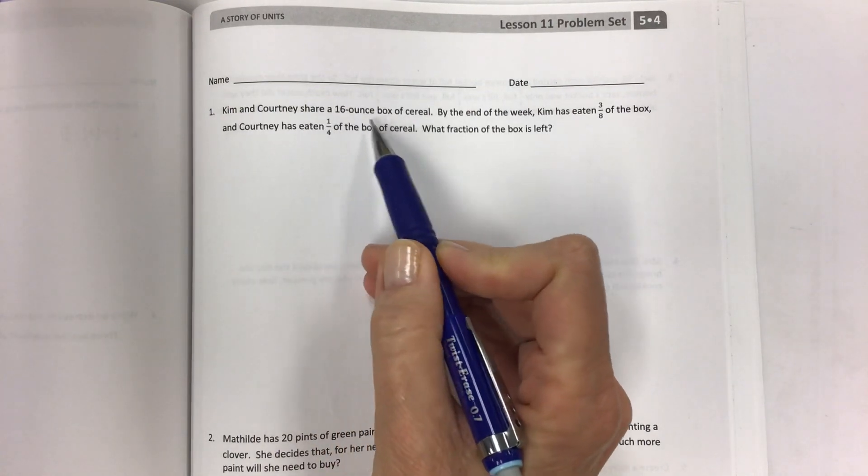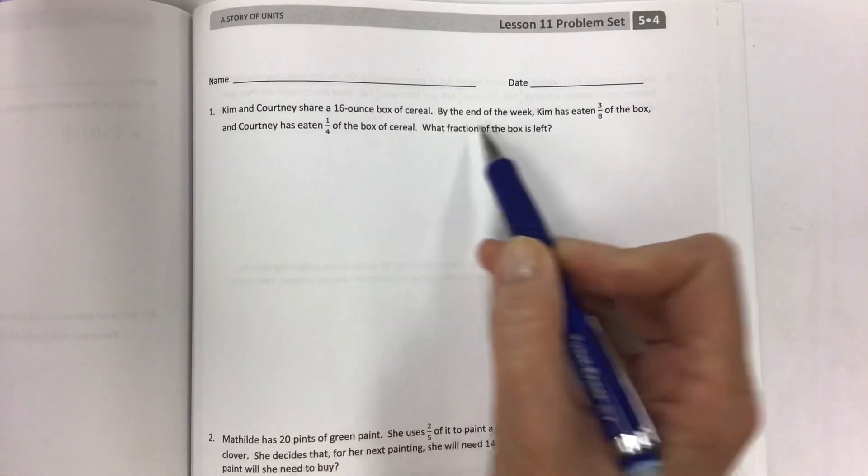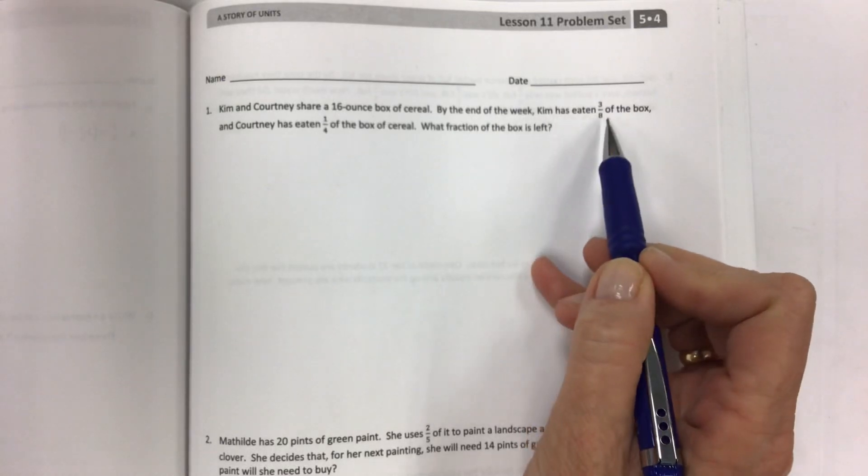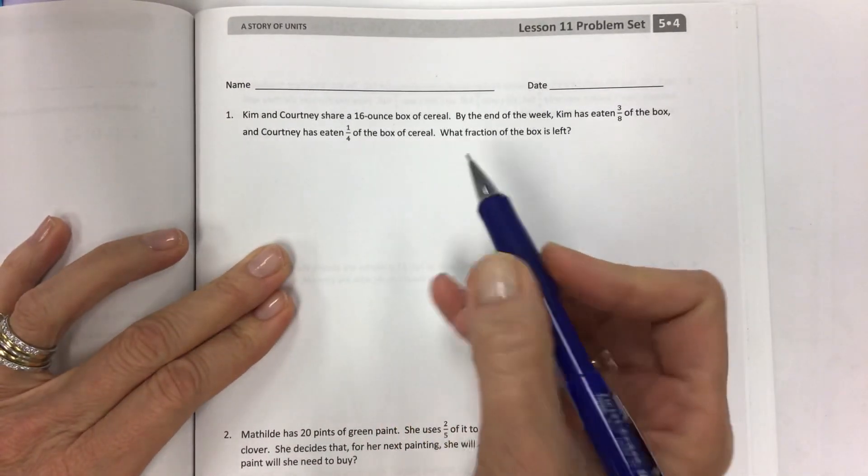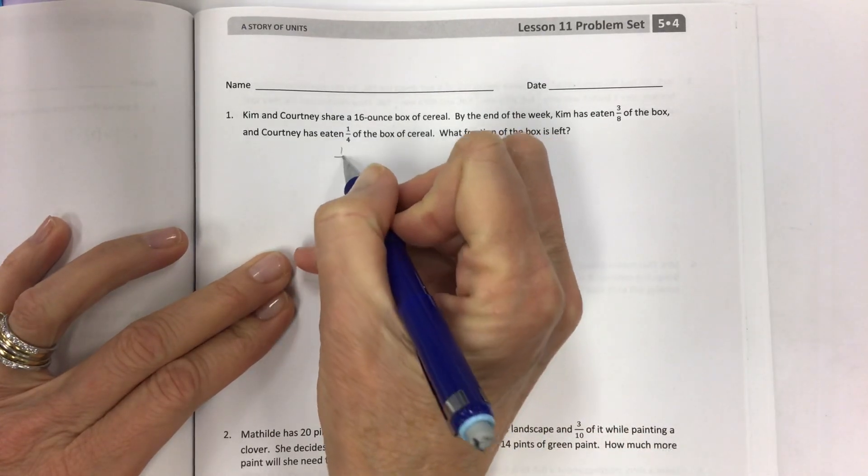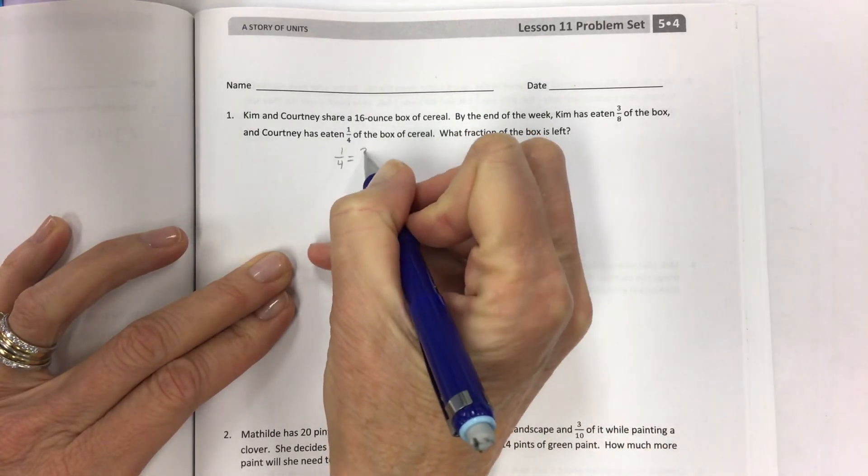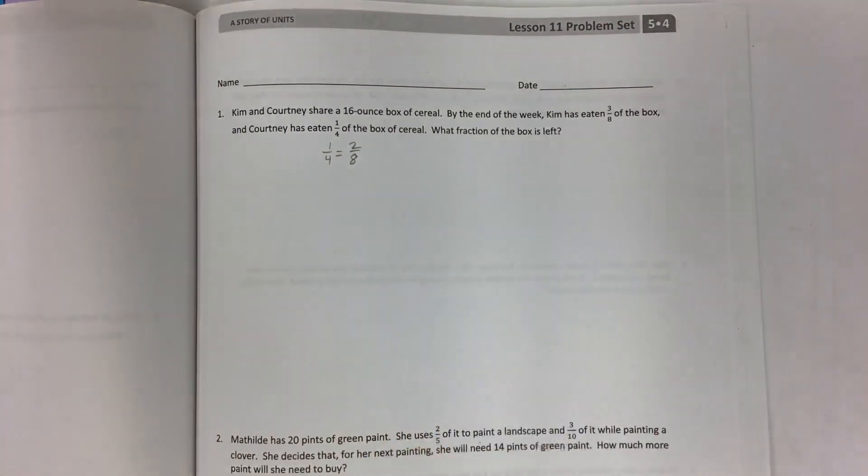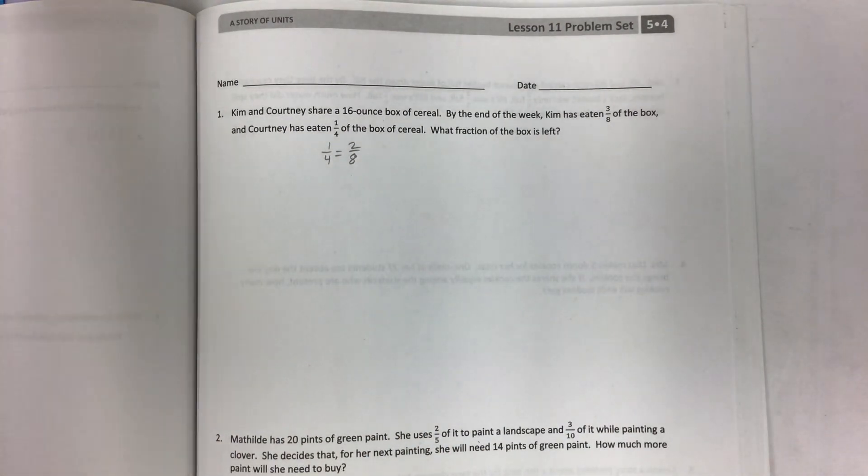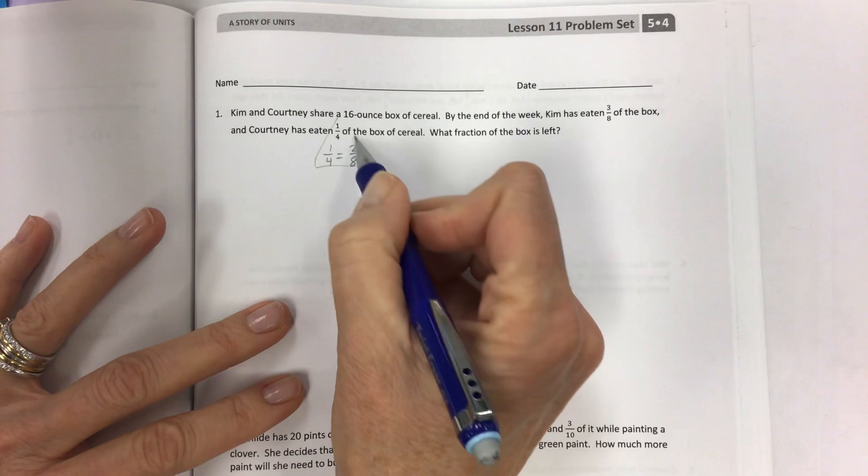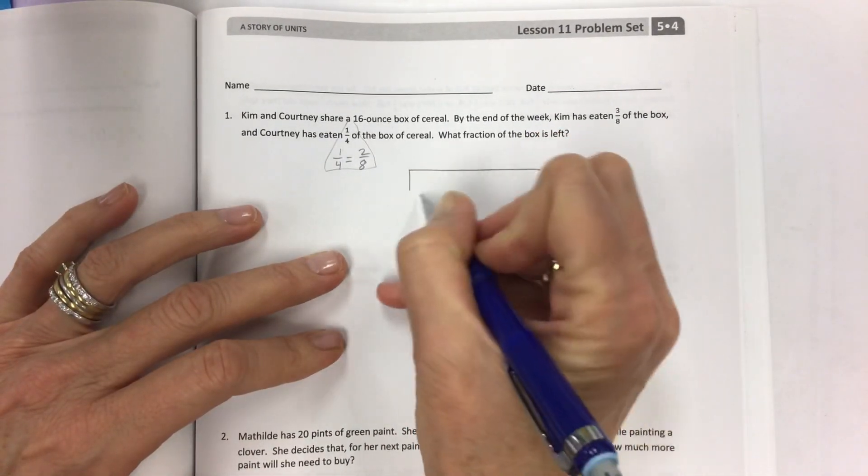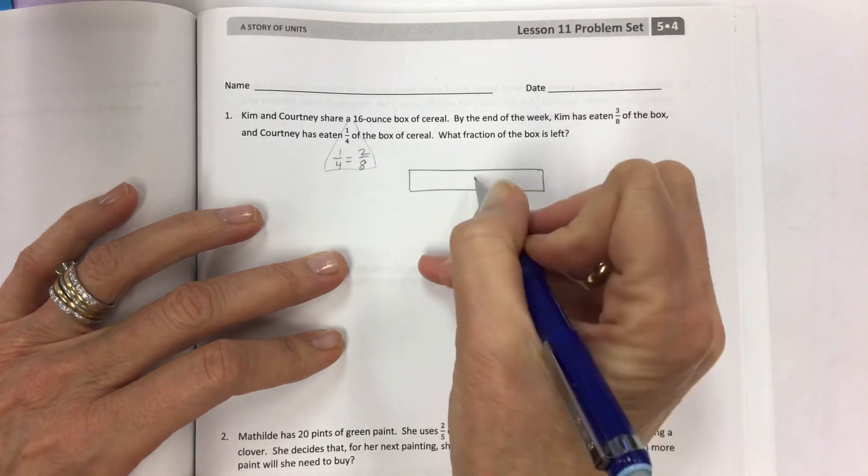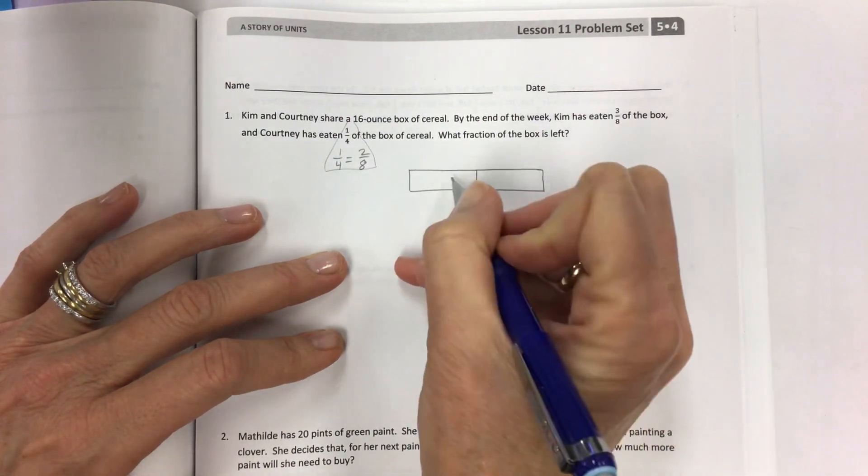I will be trying to encourage you to use your tape diagrams so that we can make a picture of what we're doing. Number one, Kim and Courtney share a 16 ounce box of cereal.